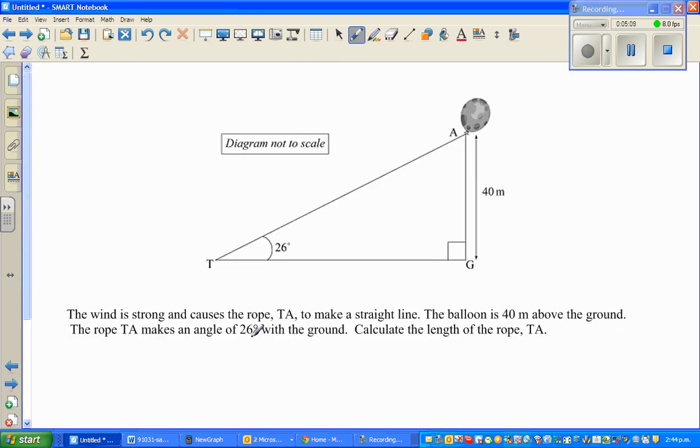Let me do one more question based on SOH-CAH-TOA. So now this is a question. The wind is strong and causes the rope TA to make a straight line. So this is the balloon and this is the rope. The balloon is 40 meters above the ground. So this is the ground. It's always good to write what the figure tells you. The rope TA makes an angle of 26 with the ground. Calculate the length of rope TA.